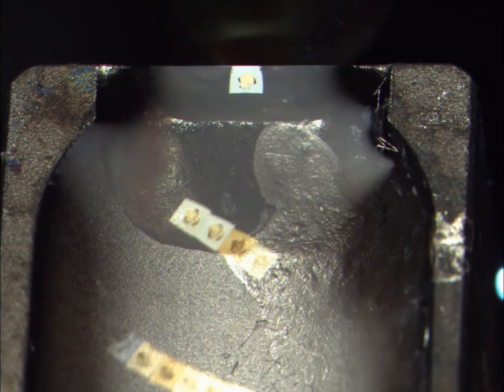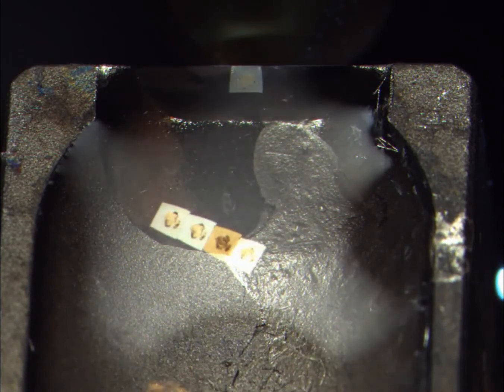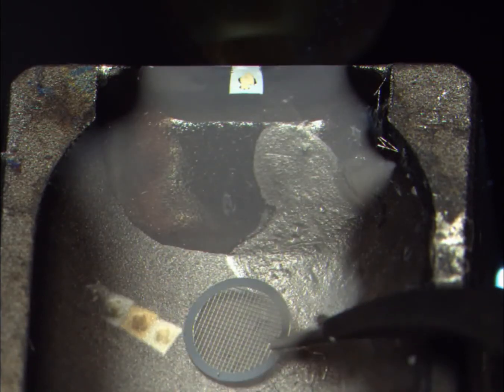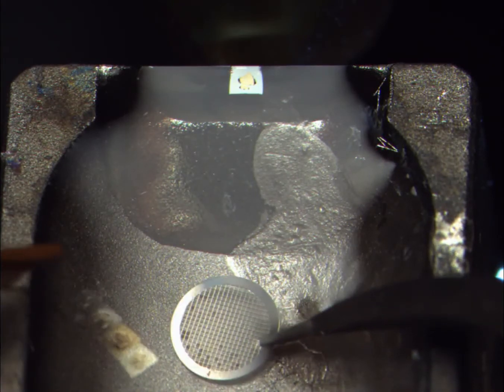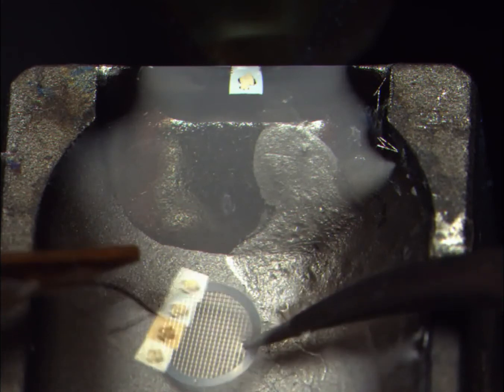Using an eyelash we can manipulate our sections and collect them onto a metal grid. We need to support our sections on this grid as the resin is so thin. The sample can then undergo one final stain before being taken to the transmission electron microscope.